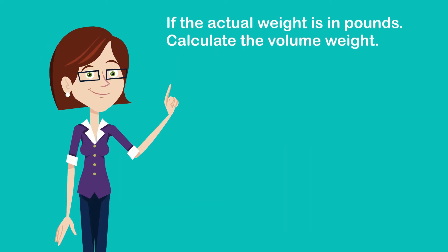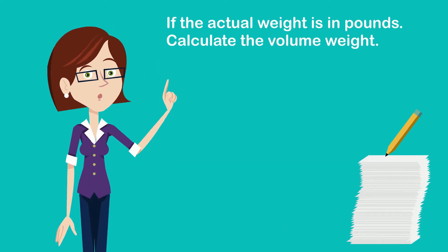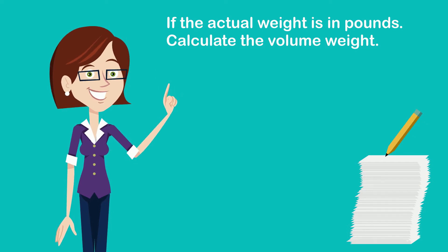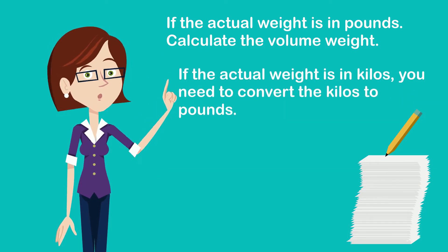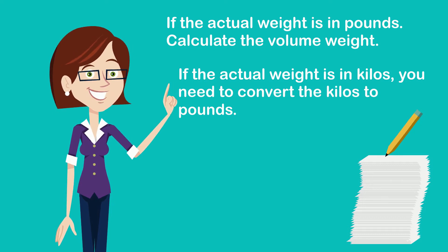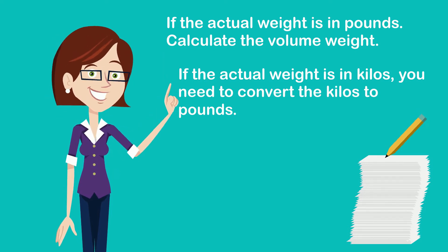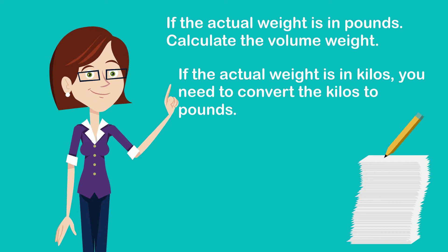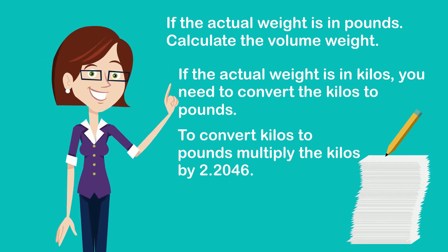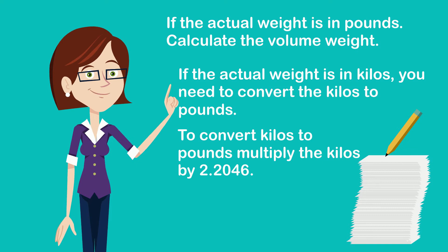Stop and look at the actual weight you calculated — is the weight in pounds? If the weight is in pounds, you can proceed to the next step and calculate the volume weight. However, if the weight is in kilograms, you need to convert the kilos to pounds by multiplying the kilos by 2.2046. This will convert the kilograms to pounds.